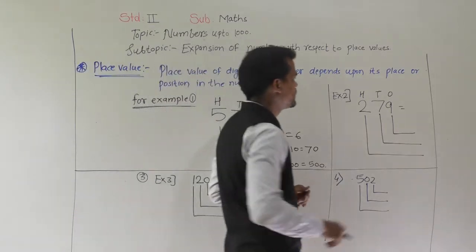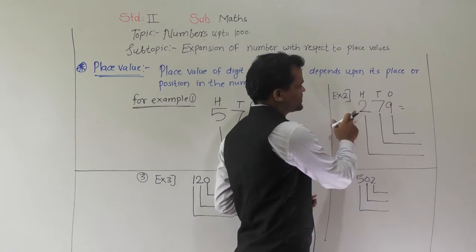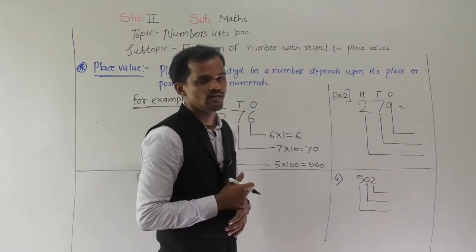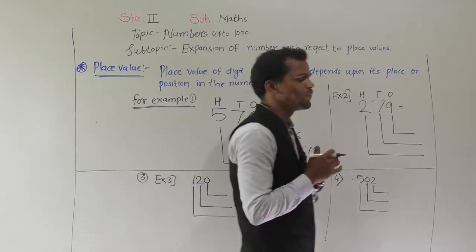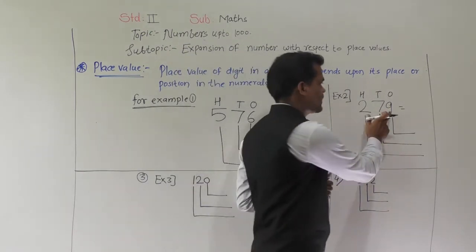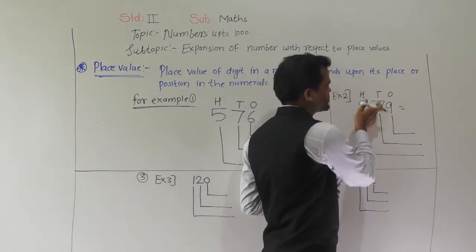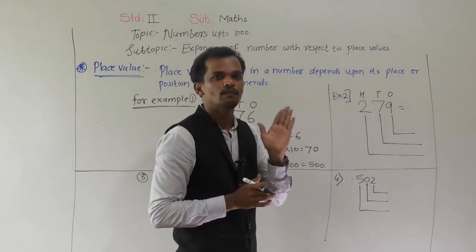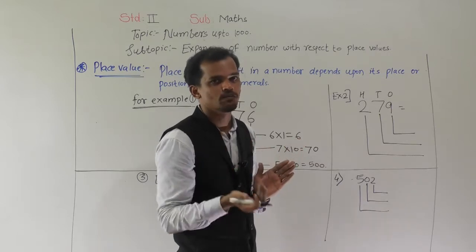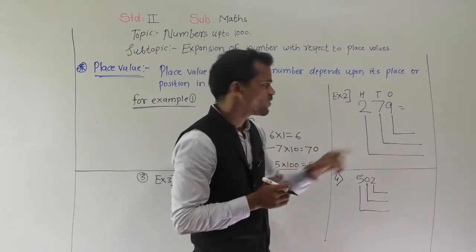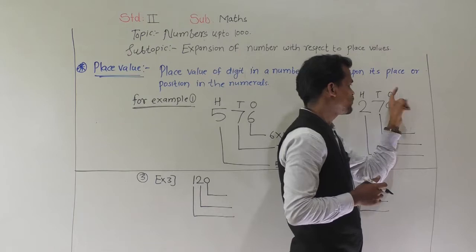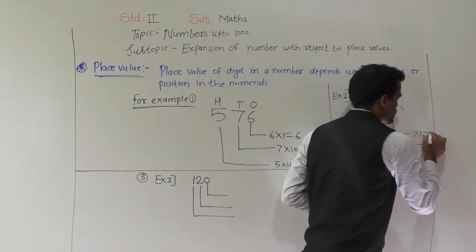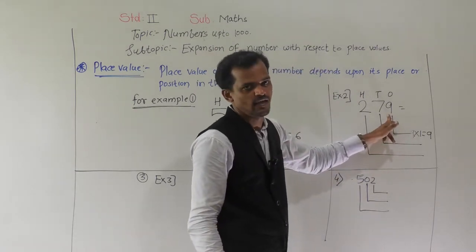Now we will see the next example. Read this number: 279. See the position of each digit — 9 comes at ones place, 7 comes at tens place and 2 comes at hundreds place. We know the place value of a digit is the multiple of its place. So 9 comes at ones place, so 9 times 1 is equal to 9. Place value of 9 is 9.